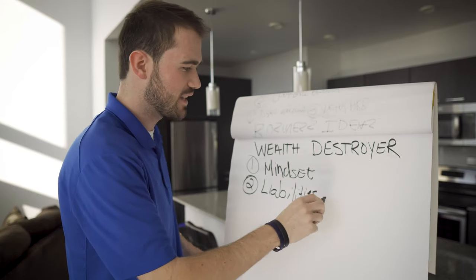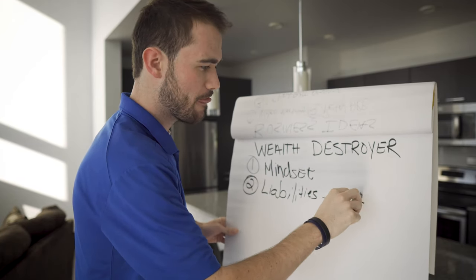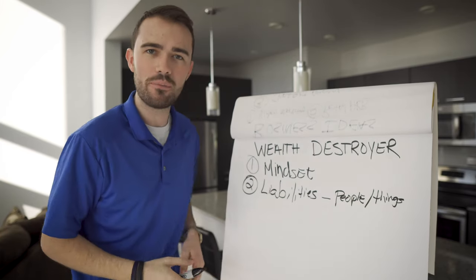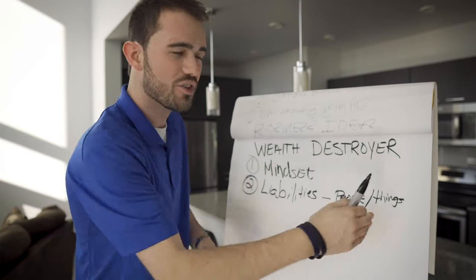Now think about liabilities like this. They're coming from people and they're coming from things. Now we just covered the people in your life. You want to try to get away from those people. Don't listen to them as much. But also the things.